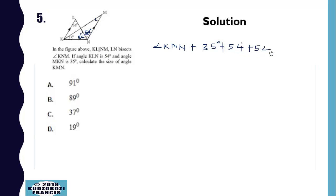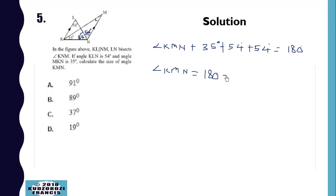So angle KMN plus 35 plus 54 plus 54 equals 180. If you want the full solution you can click the link below to get a complete solution. So angle KMN is equal to 37 degrees.